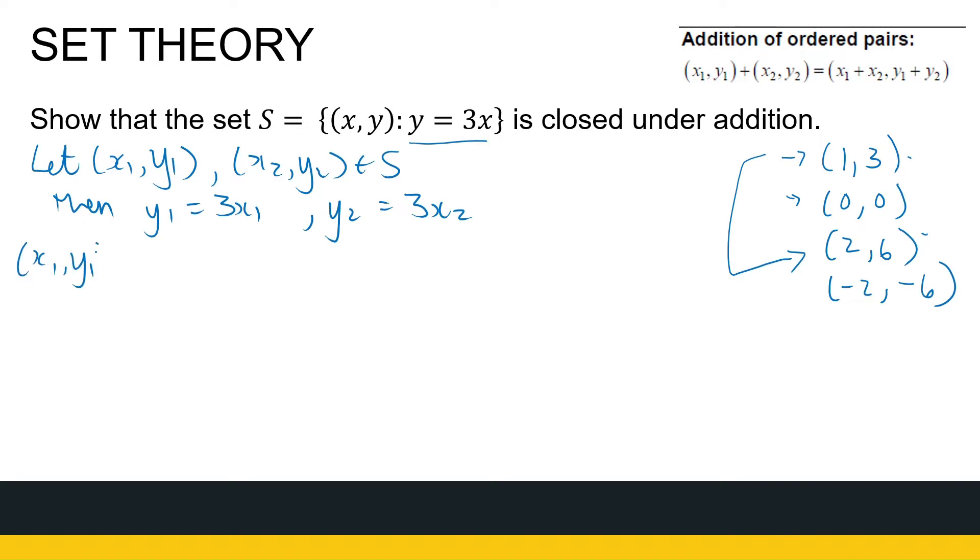So that is what I know because they are in S. So now let us see what happens if I add them together. (x1, y1) plus (x2, y2). Now, as we add ordered pairs, we know that we add the x's and the x's, x1 and x2 and y1 and y2. Now, we haven't really done anything.